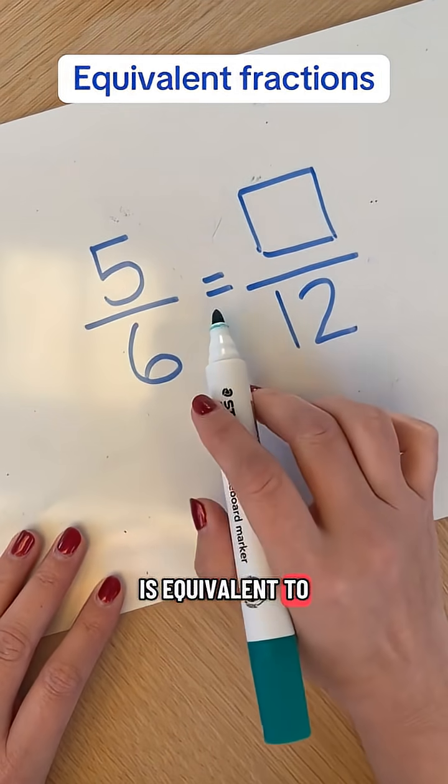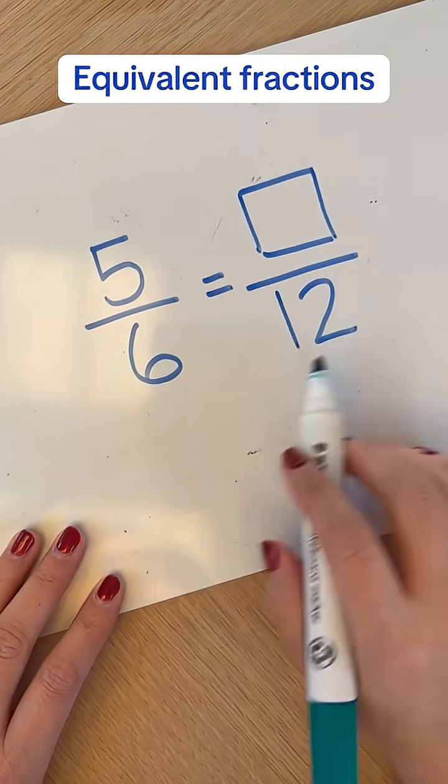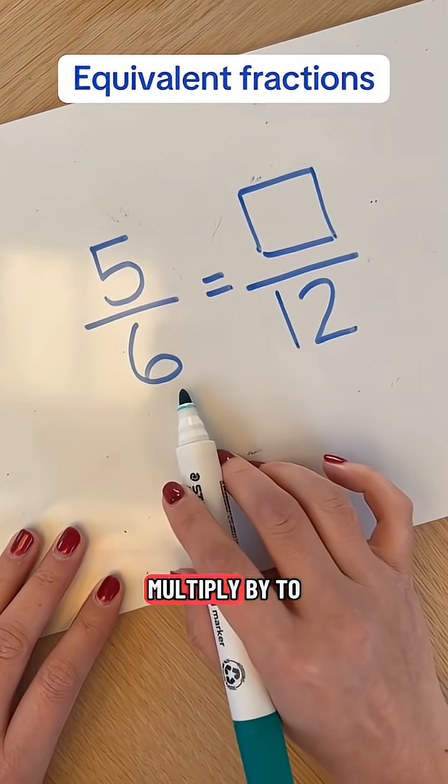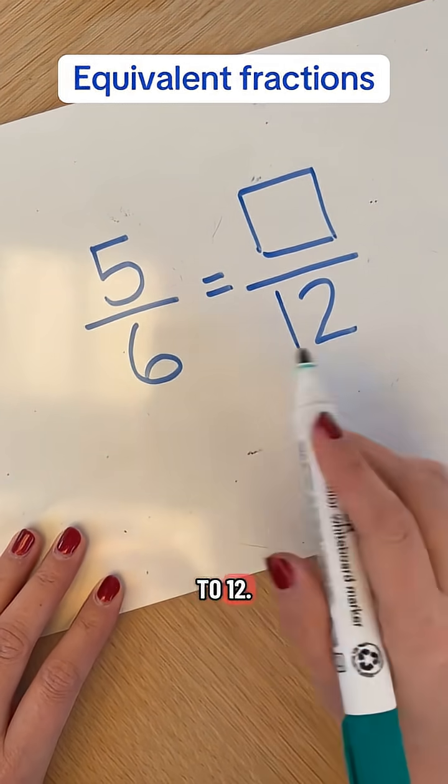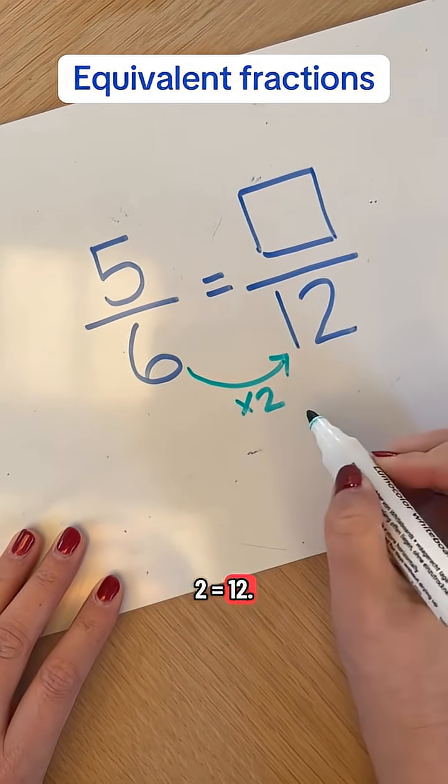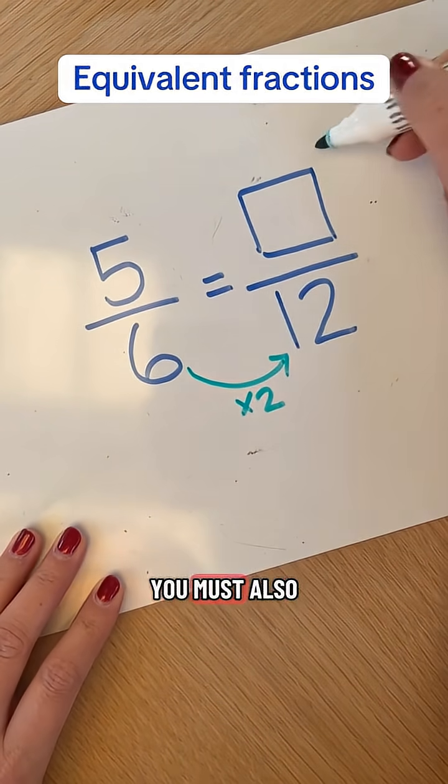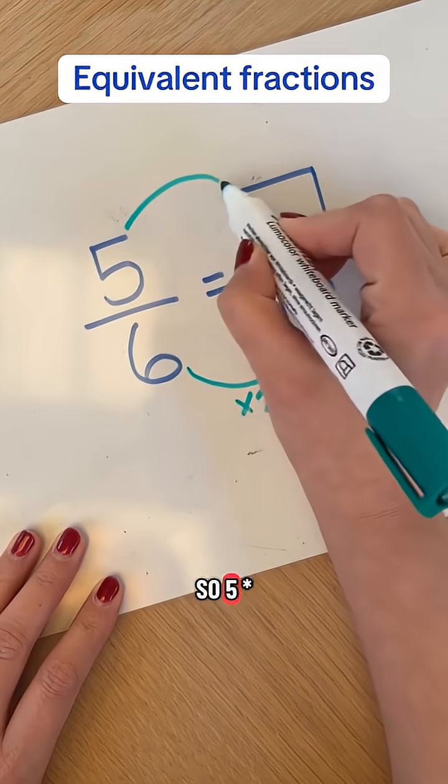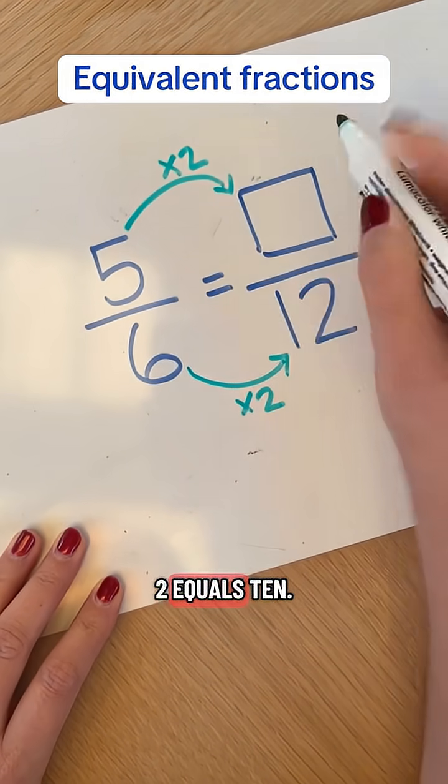So 5 sixths is equivalent to something over 12. We want to find out what we need to multiply by to get from 6 to 12. So 6 times 2 equals 12. And whatever you do to the bottom, you must also do to the top. So 5 times 2 equals 10.